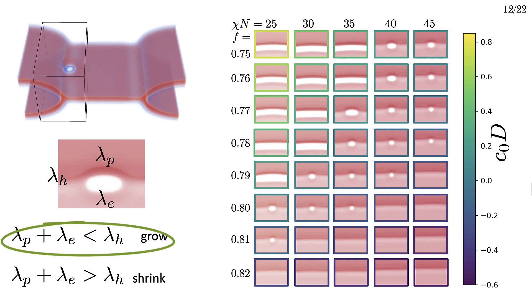If lambda p plus lambda e is less than lambda h, then the system can lower its free energy by simply unzipping the single layer and double layer regions, i.e. growing the pore along the interface. If lambda p plus lambda e is smaller, then the system can lower its free energy by shrinking the pore away.